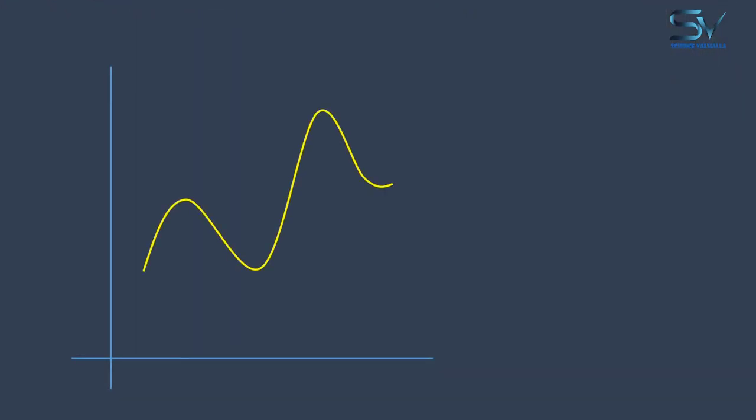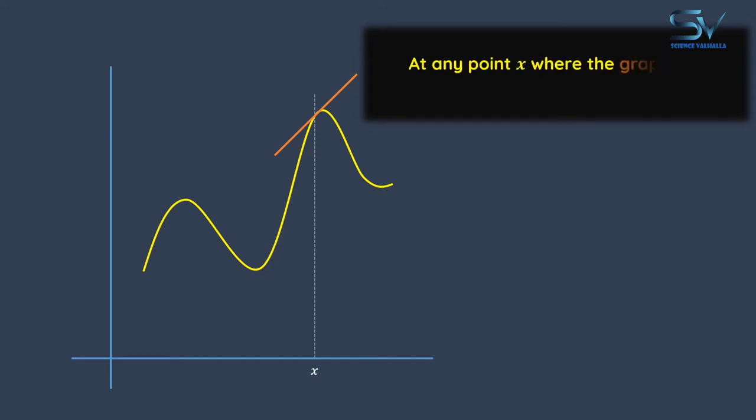In calculus, if the slope is finite at any point in our graph, we say that the function is differentiable at that point. And the second thing, which we used to call the slope, will now be referred to as the derivative of function.